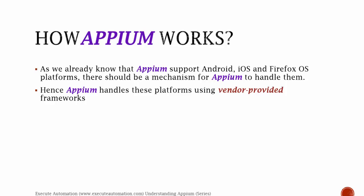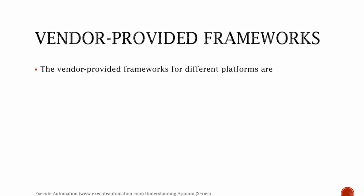So what are these vendor-provided frameworks and what do they do? For iOS, it's Apple's UI Automation, and this framework is actually developed by Apple itself. Similarly, for Android 4.2 and above versions — 4.2, 4.4, or whatever future versions — they are actually supported using Google's UI Automator. This API is available to Appium, and hence Appium supports automation in this particular platform.